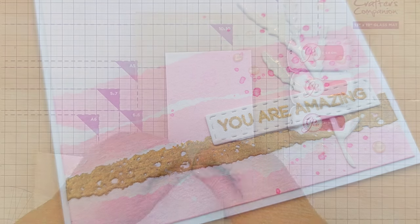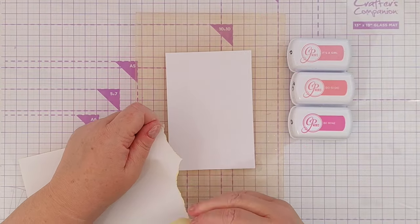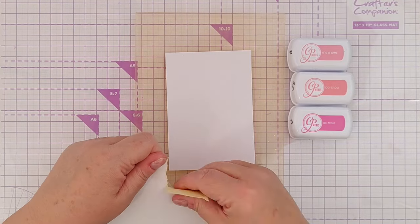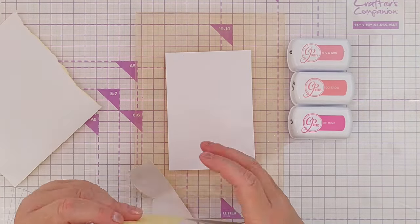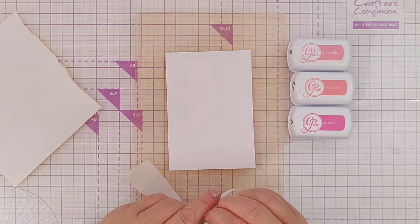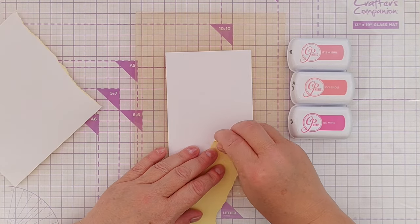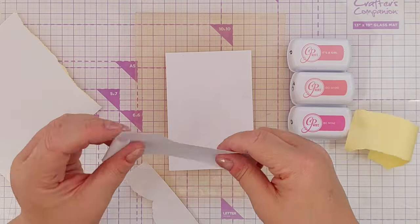The first thing I did was take a panel of mixed media paper and pop it on my grip mat, and then I tore up some masking paper. This is very low tack sticky paper that you can stick on your project, use to mask off an area, and then peel off again.